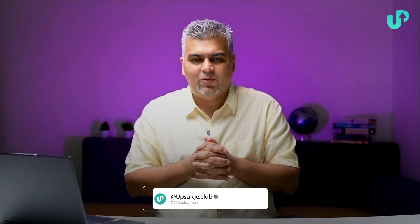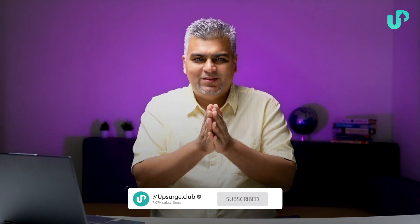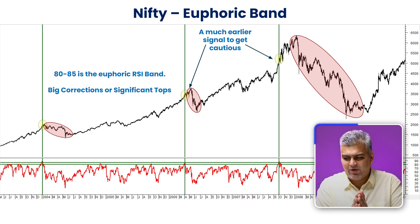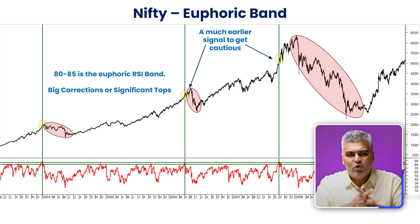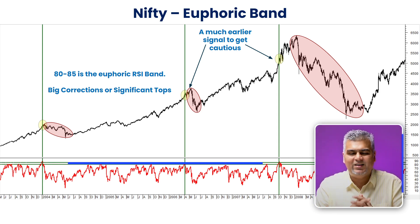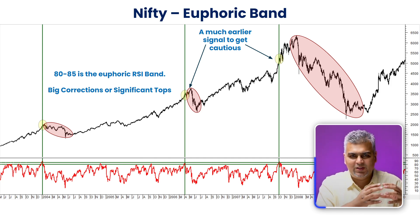RSI as a confirmation indicator is fairly simple, so we focus more on overbought/oversold and divergences. Rather than using the standard 70/30 levels, I take an index's 10-year daily chart with RSI 14 and look at where readings actually cluster. For example, in Nifty over the last 10 years, the majority of upper readings have come around the 80 to 85 mark. This is what I call the euphoric band.